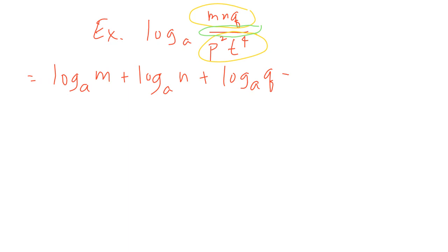Remember, there are two terms at the bottom, so we need parentheses to group them so we can distribute the minus sign. In the denominator we have p squared times t to the power of 4, so we apply the product rule. That gives us log base a of p squared plus log base a of t to the power of 4 inside the parentheses.